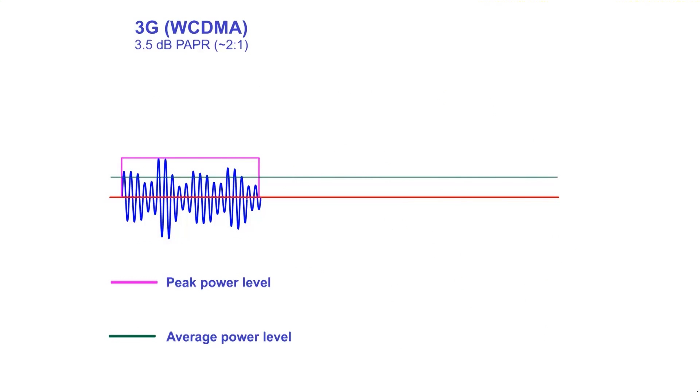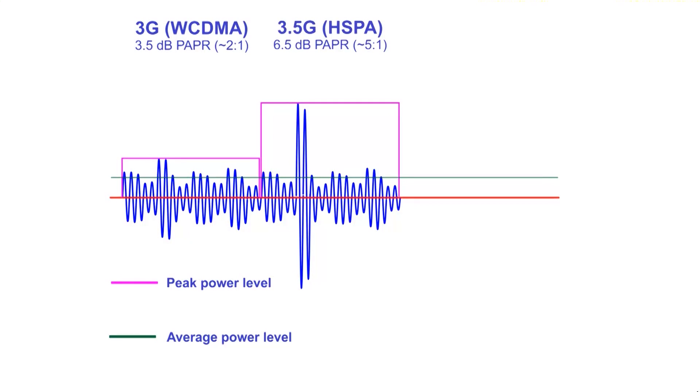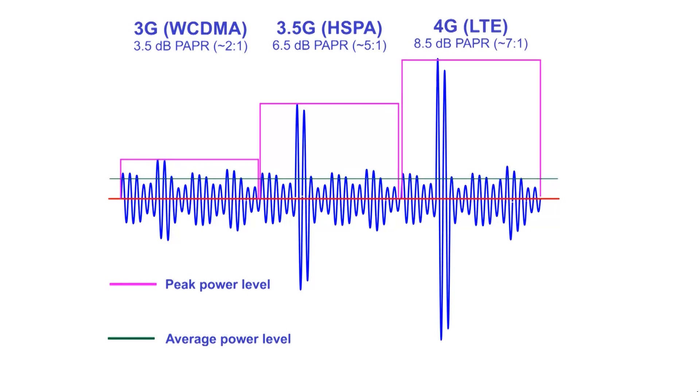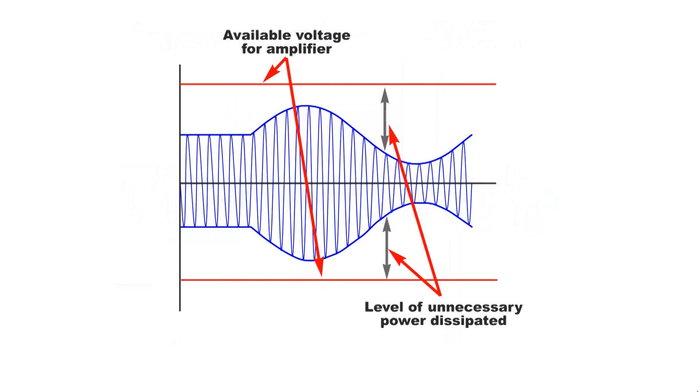As an example, we have seen the peak to average power ratio increase significantly as mobile phone systems have migrated from the basic 3G UMTS through HSPA to 4G LTE. The problem with high peak to average power ratio waveforms is that the RF amplifier has to be provided with the power to accommodate the peaks and only use this capability for short periods when the peaks are there.